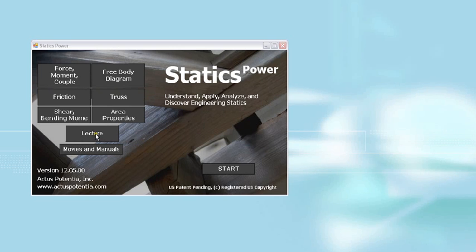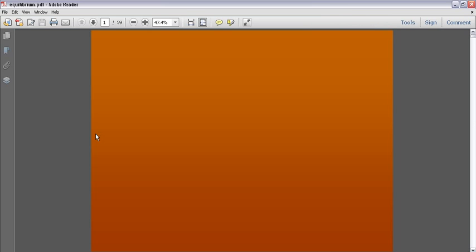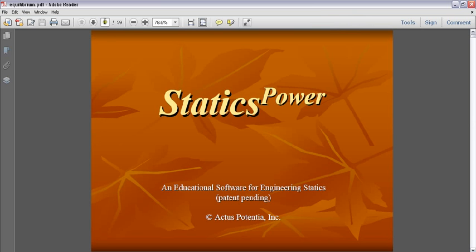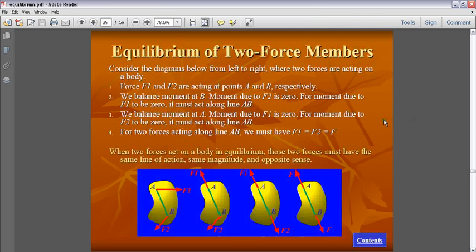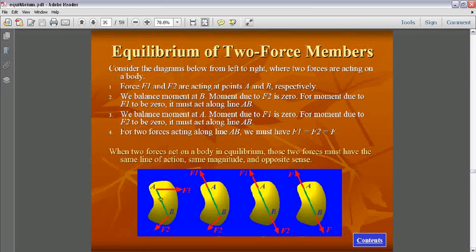We go to page 39 in the statics software where we discuss the equilibrium of two-force members. A two-force member, shown in the diagrams at the bottom — looking at the diagram at the extreme left — is a member which has only two forces acting on it. You have to be very precise and specific about this: only two forces acting on it.